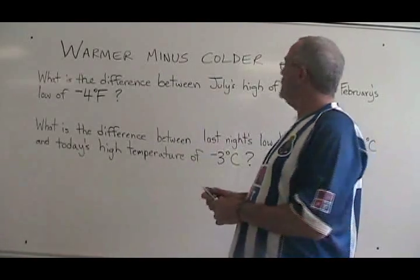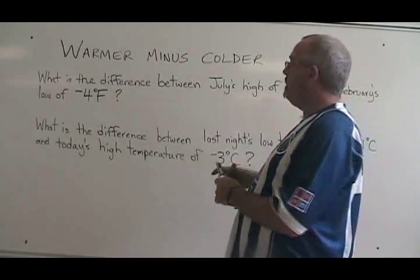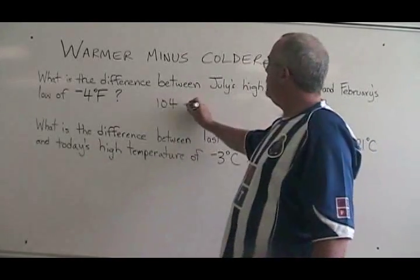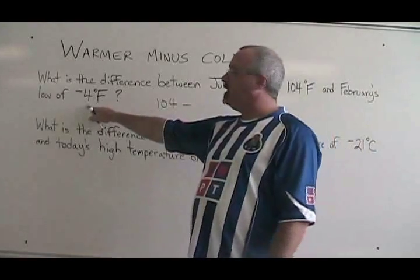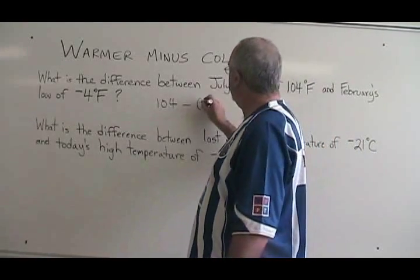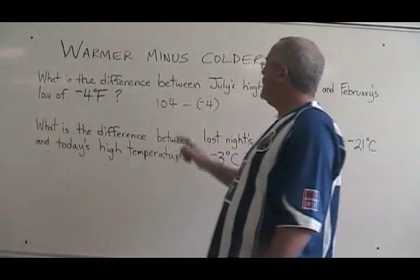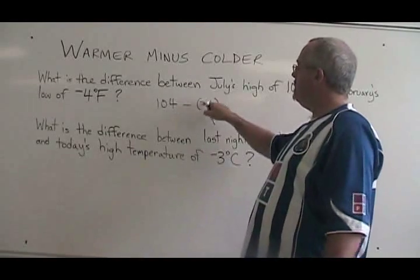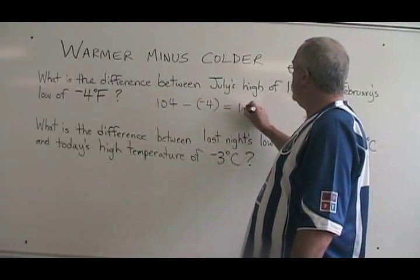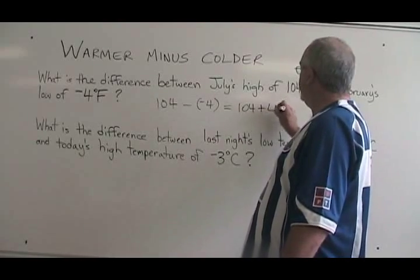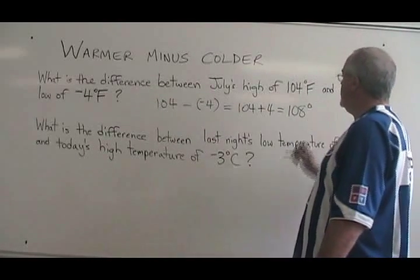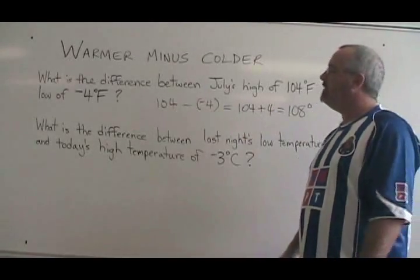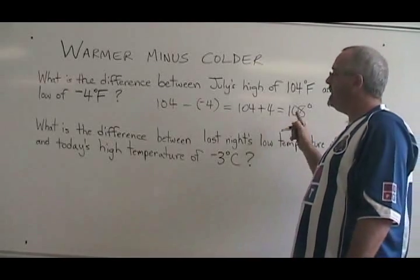Warmer minus colder. The warmer of those two temperatures is 104, so I write 104. Then I put minus, and then I put the colder temperature, which is negative four — I have to write a negative sign with it. I end up with 104 minus negative four. We know that the two minus signs cancel, so that is equal to 104 plus four, which is 108 degrees. And truly, the difference between 104 degrees Fahrenheit and negative four degrees Fahrenheit is 108 degrees. It works.